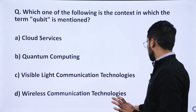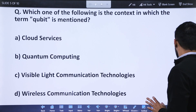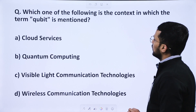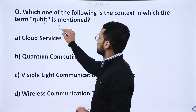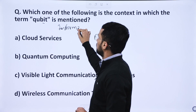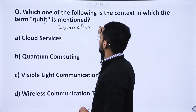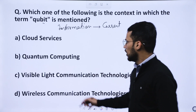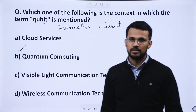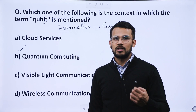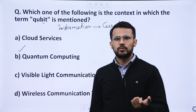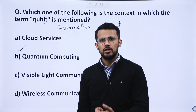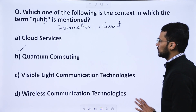The next question is purely information-based and current-affairs-related: 'Which one of the following is the context in which the term qubit is mentioned?' Qubits are quantum bits — quantum particles whose properties are harnessed for computational purposes. In the context of quantum computing, these quantum particles are called quantum bits or qubits. The answer is D. This demonstrates that information-based questions require current awareness of terminology and context.